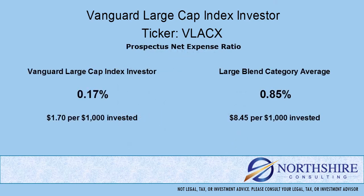We always talk about expenses when we do our fund reviews. Here's why: the expense ratio is taken from the return that the portfolio produces. The expense ratio is internal, meaning you don't necessarily see it — it comes out in the returns. We need a point of reference when we compare these expenses, so we use the category average. As you can see here, the expense ratio is significantly lower than the category average.